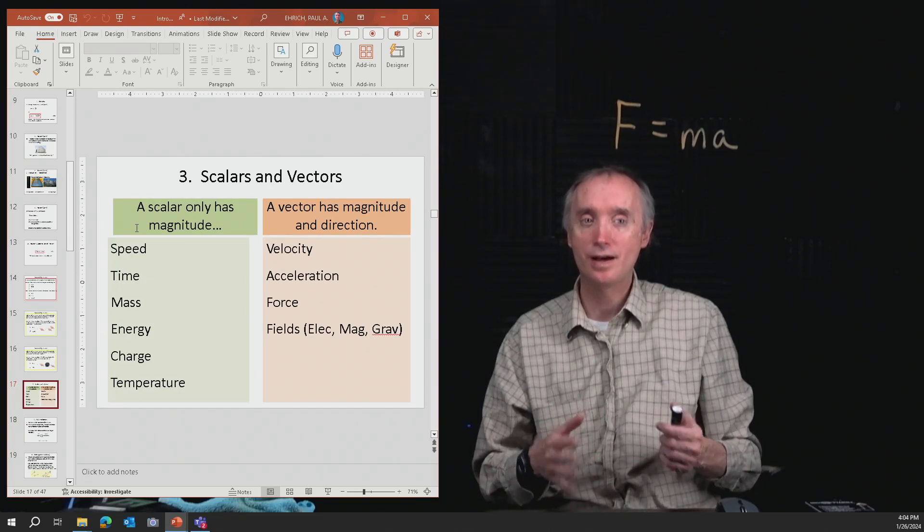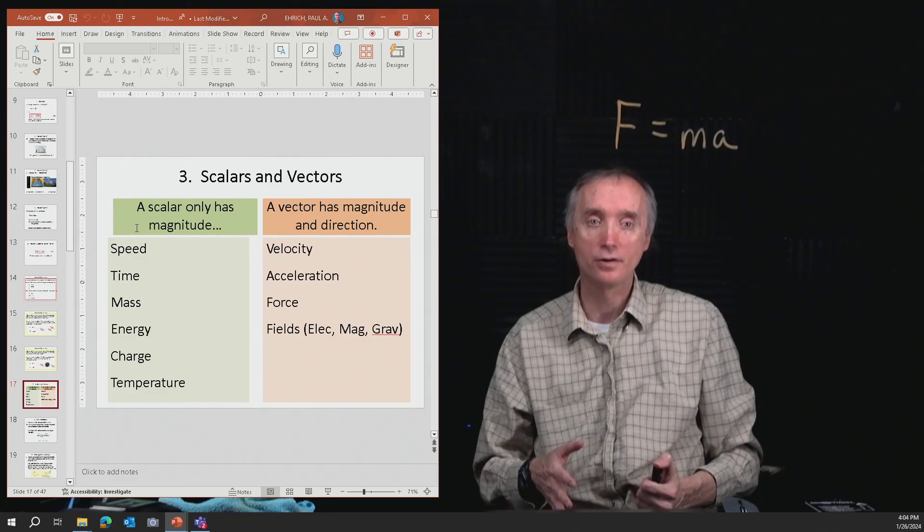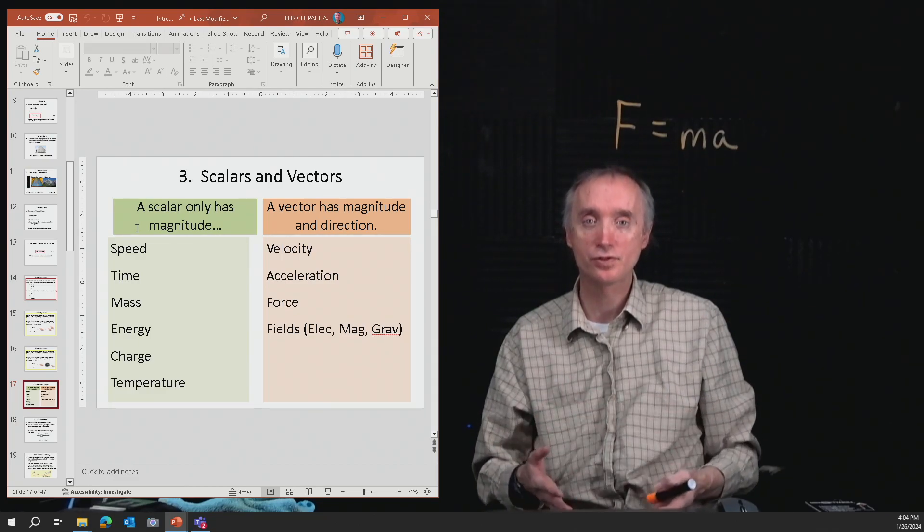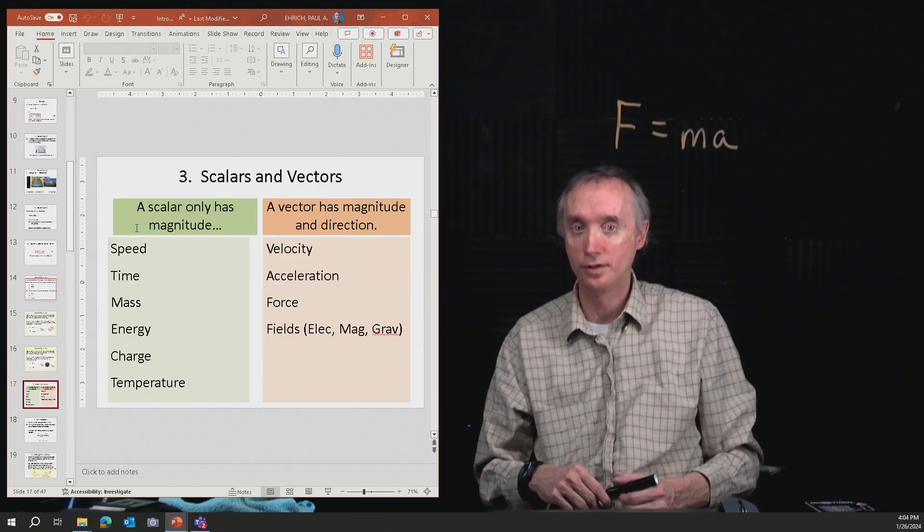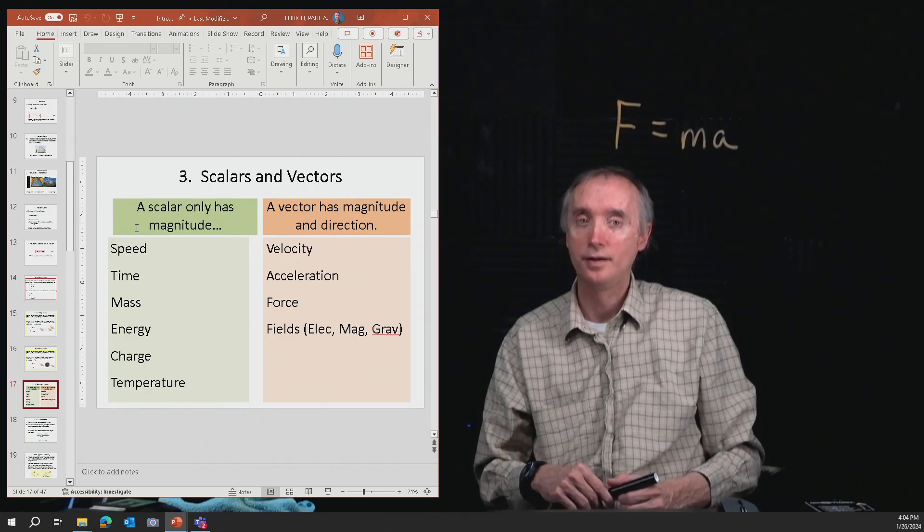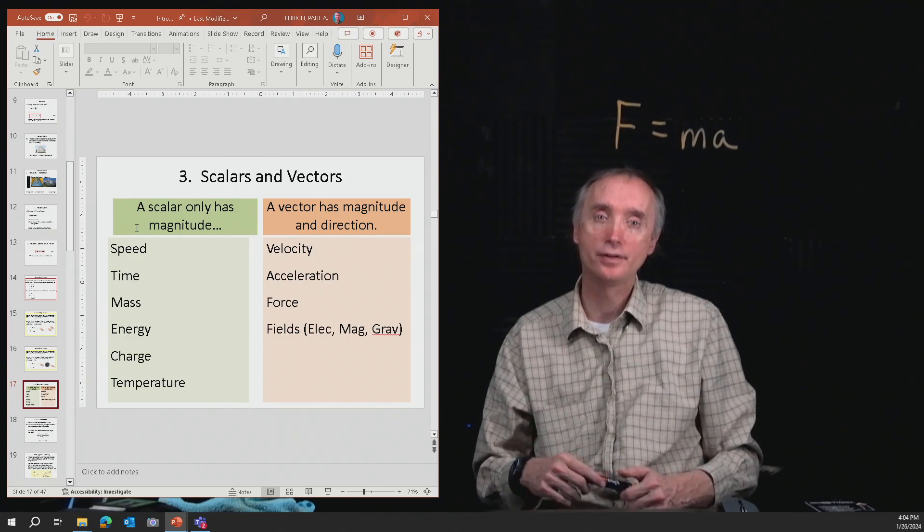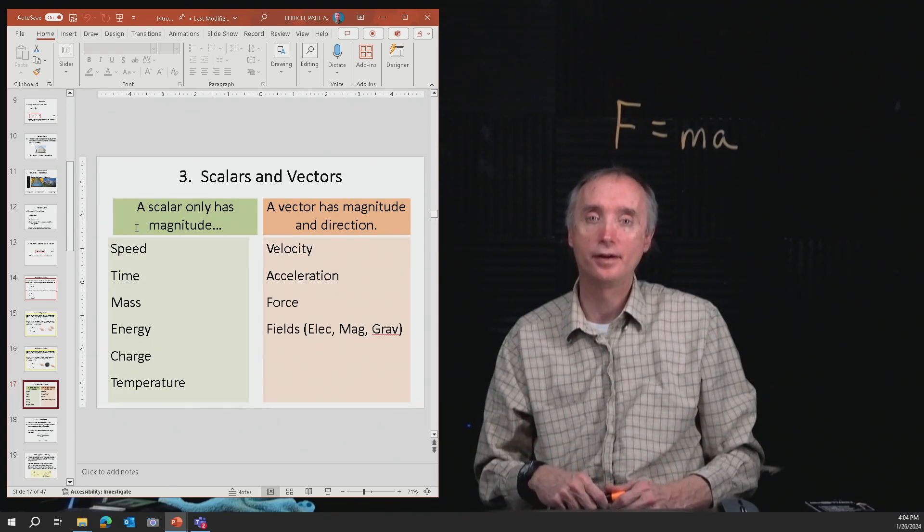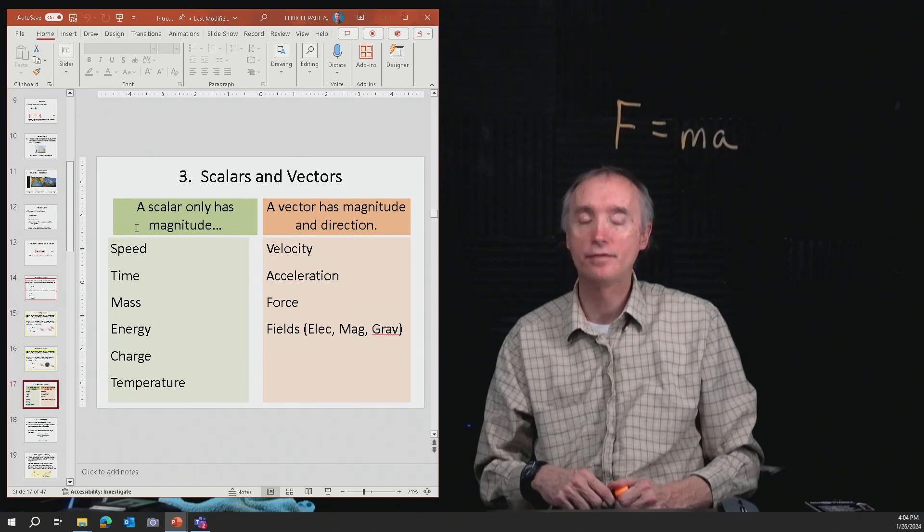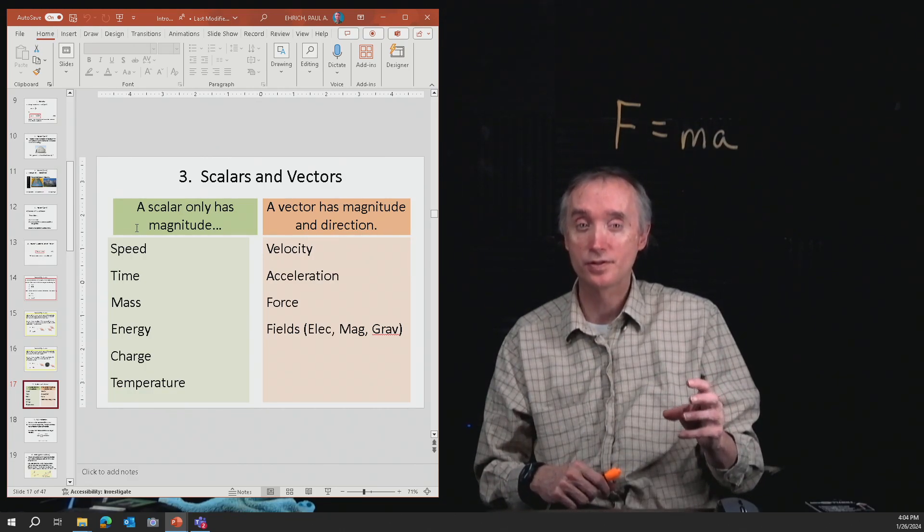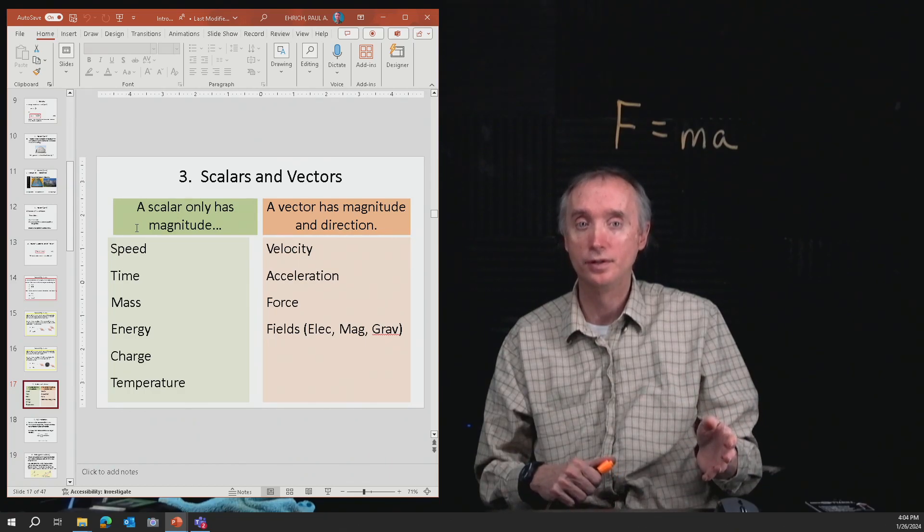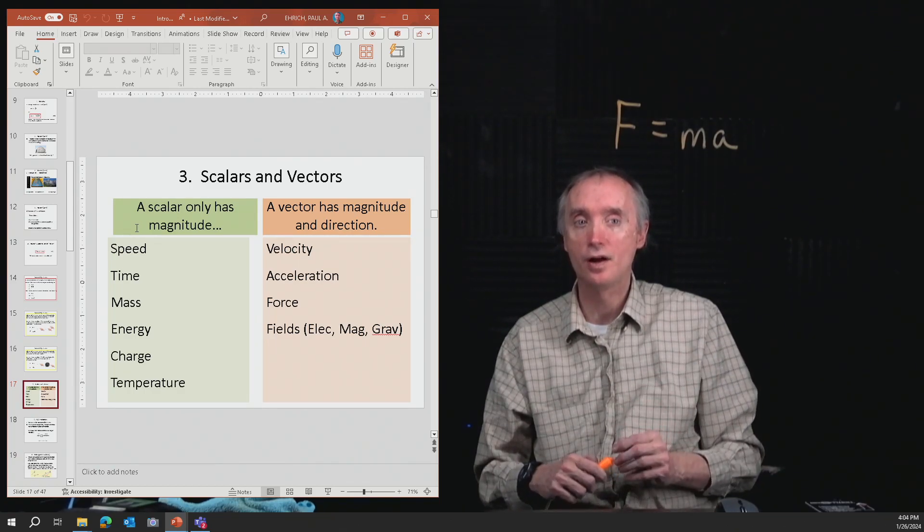So the speedometer on your car tells you how fast you're going, but it's not telling you what direction you're going. If, on the other hand, you had a navigation system telling you your speed and it's got a compass telling you what direction you're going in, that's really your velocity. So velocity is your speed and the direction that you're going in.